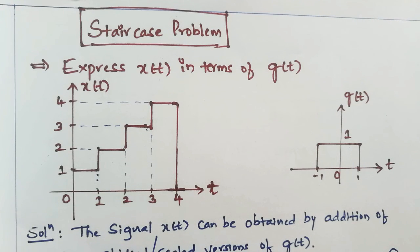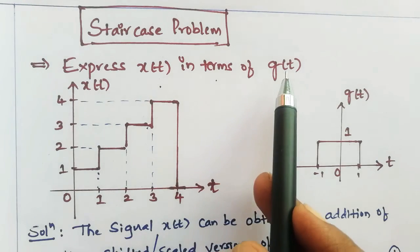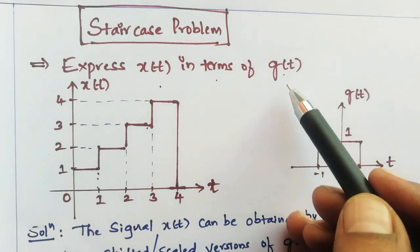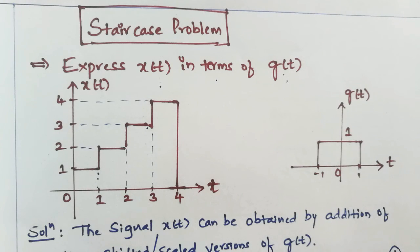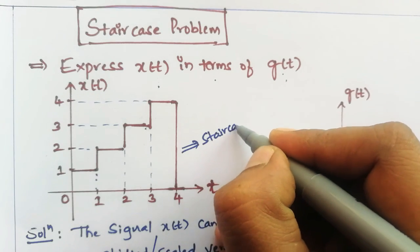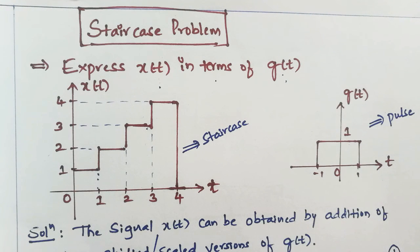Hi friends, in this video we will discuss a very important problem from an exam point of view. You may refer to previous year question papers of BTU — you can find these kinds of questions every time. That is nothing but the staircase problem. Let us see: express X of T in terms of G of T, where X of T is a staircase and G of T is a pulse.